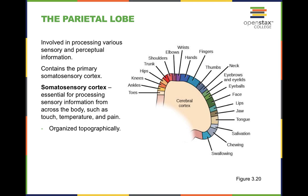Now we're going to move toward the parietal lobe. The parietal lobe is on the top of your head. You can think of this lobe as the sensory lobe because it processes a lot of your senses — except for one in particular, which we'll get to. It's really important for touch, temperature, as well as pain, as illustrated by figure 3.20.